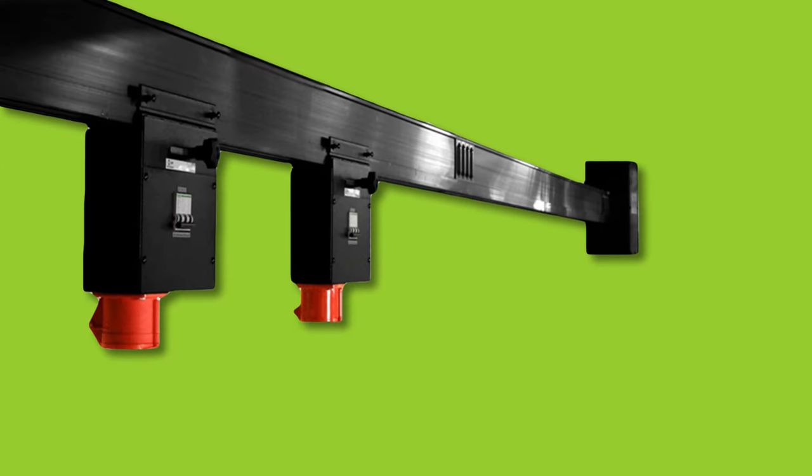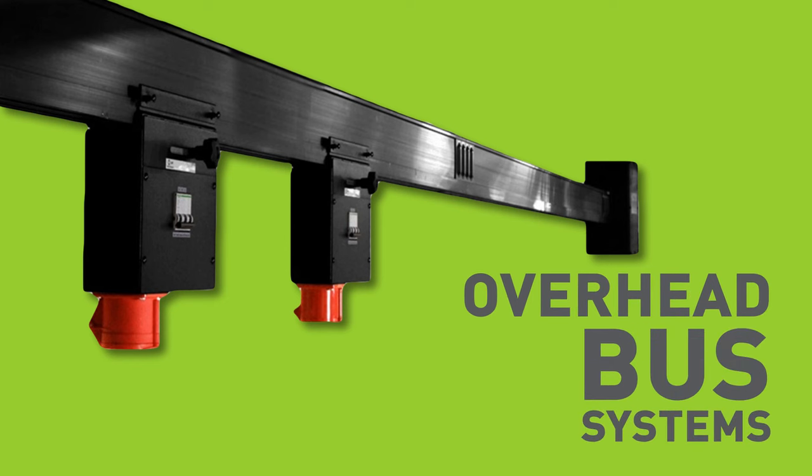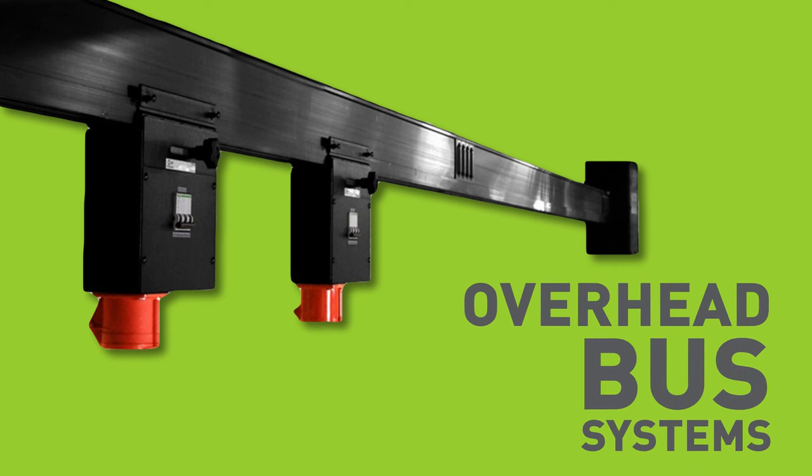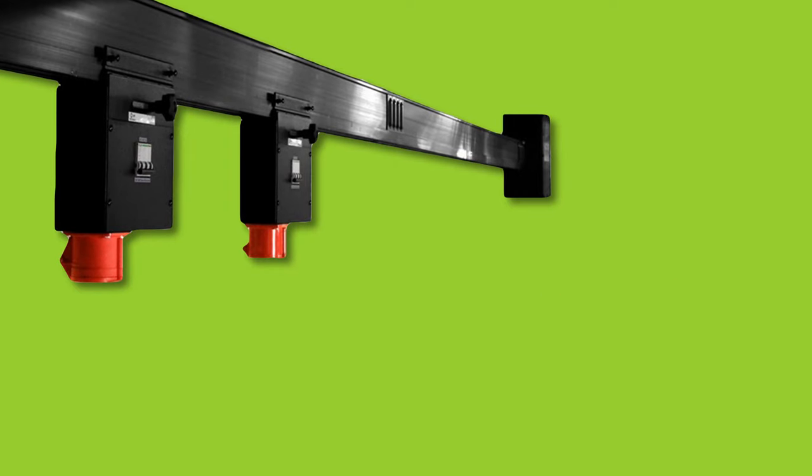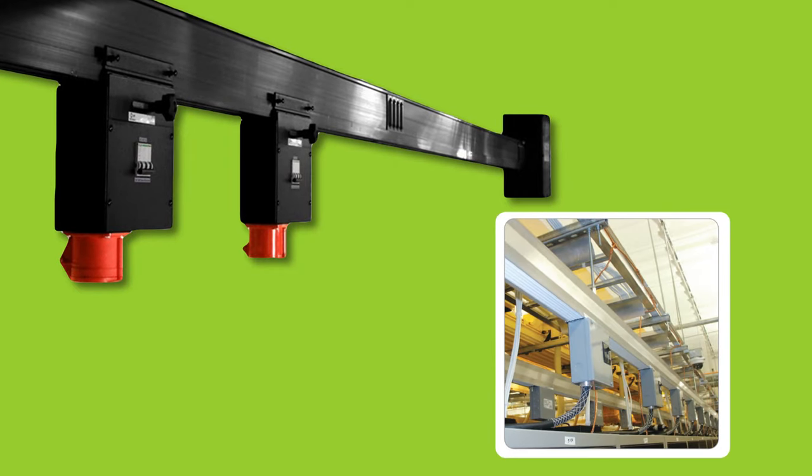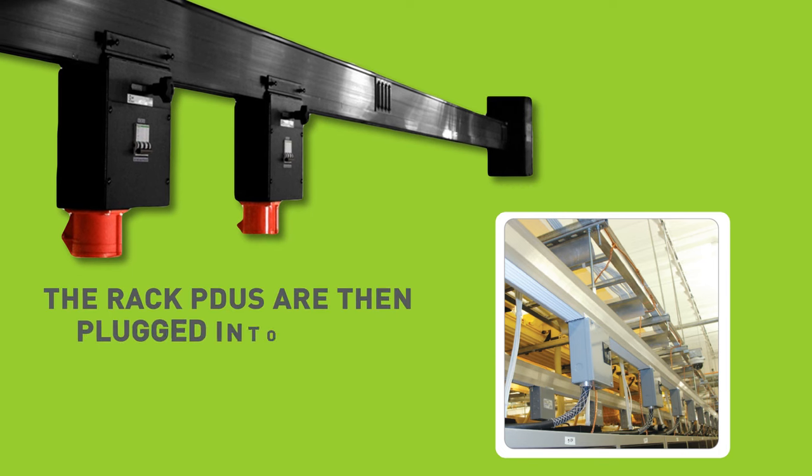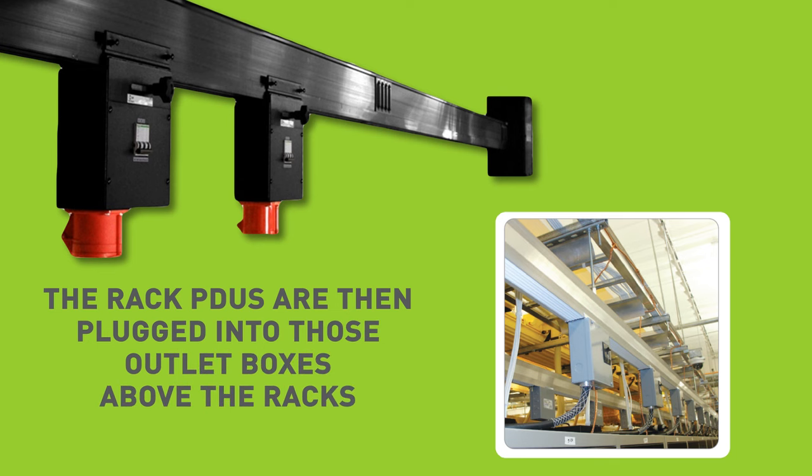An important exception to the just mentioned power chain is the increasing use of overhead bus systems. These systems connect to the UPS and eliminate the need for floor PDUs, RPPs, and whips running underneath a raised floor. Instead, the overhead bus systems have sophisticated channels running over the racks and other equipment. Outlet boxes can then be placed wherever needed along these channels and are simply connected into the overhead busway. The rack PDUs are then plugged into these outlet boxes above the racks.